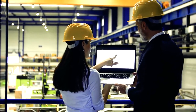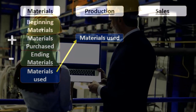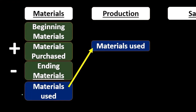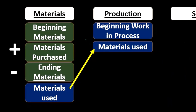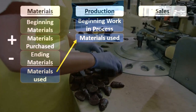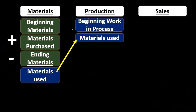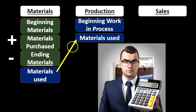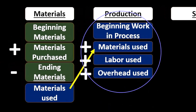Once that happens, the materials used number feeds into our production area. This is what we used to produce, but it's not the only thing in production — we also have beginning work in process, often abbreviated WIP. So we already had some items in work in process, and this month we add more materials to work in process based on this calculation.